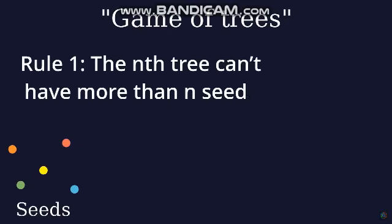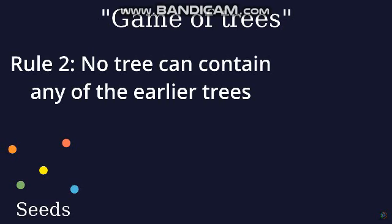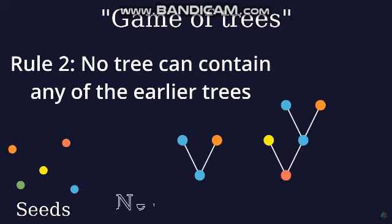To explain what this number is, we need to play a game of trees. In this game, we try to create a forest using colored seeds, following 2 rules. The nth tree can't have more than n seeds. The first tree can have only 1 seed, the next can have no more than 2, and so on. The second rule is that when you try to build a tree, it cannot contain any of the earlier trees within itself. For example, this tree contains this one, so it cannot be built. Also, a tree is contained in another tree if they preserve the nearest common ancestor rule.